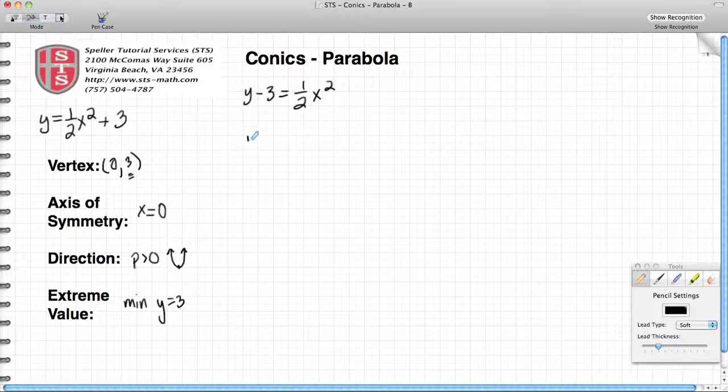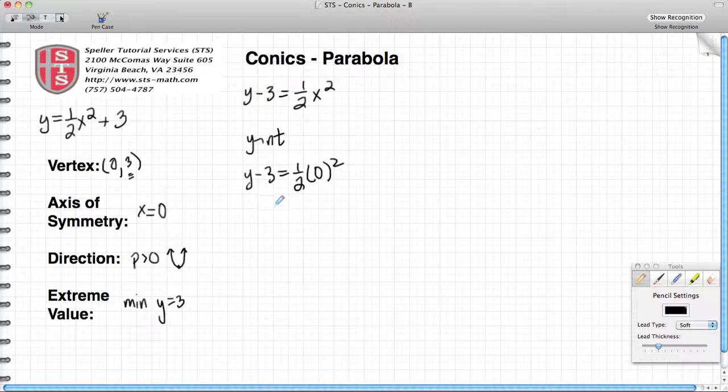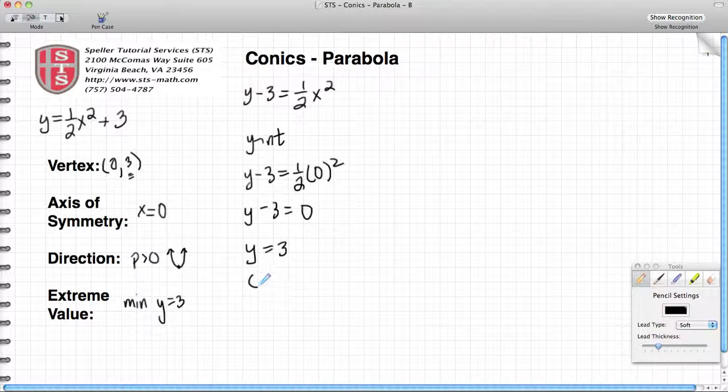We're going to start off by trying to find our y-intercept. To find our y-intercept, that means we're going to substitute in the value of 0 for x so we can find out what y is at that particular point. In this case, y minus 3 is equal to 1 half times 0 squared. We know that any time you multiply something by 0 the result is 0, so everything to the right-hand side of the equal sign becomes 0. Now we want to isolate the y variable, which means we have to add 3 to both sides.